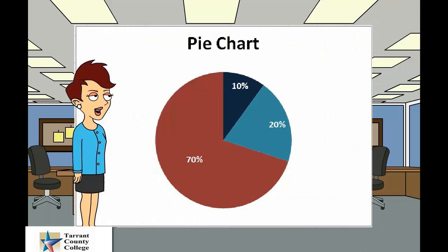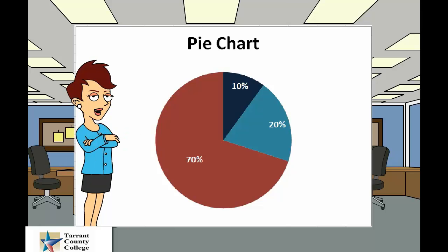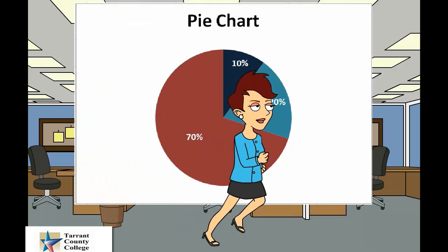Pie charts are best to use when you are trying to compare parts of a whole. They do not show changes over time. Pie charts are used for categorical variables when comparing parts to the whole. Values will be unique to a single category and the categories will sum to 100%.